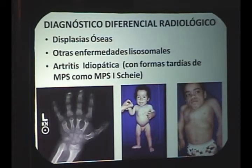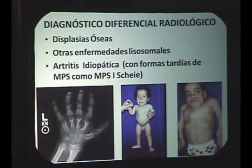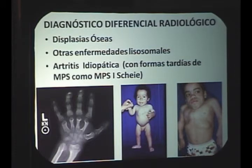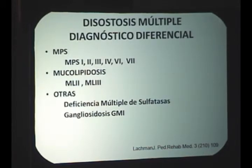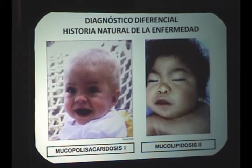El diagnóstico diferencial incluye otras displasias óseas, otras enfermedades lisosomales, y artritis idiopática juvenil o cambios articulares autoinmunes. Si yo digo disostosis múltiple, tengo que pensar primariamente en mucopolisacaridosis, pero no son las únicas: las mucolipidosis y la deficiencia múltiple de sulfatasas también pueden dar cambios óseos. Es cuestión de ver la historia natural de la enfermedad y el abordaje enzimático para distinguirlas.